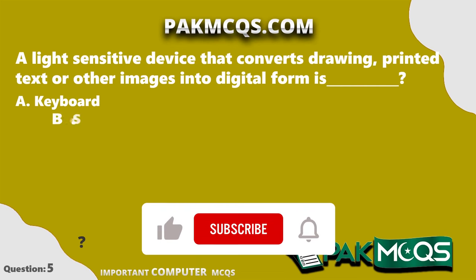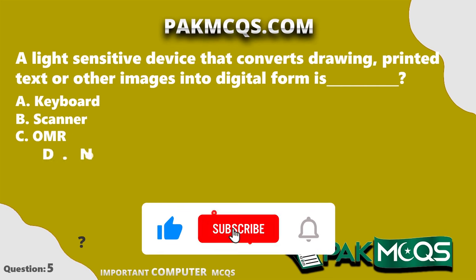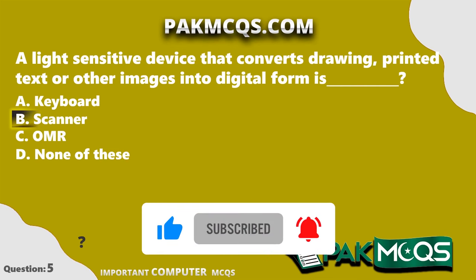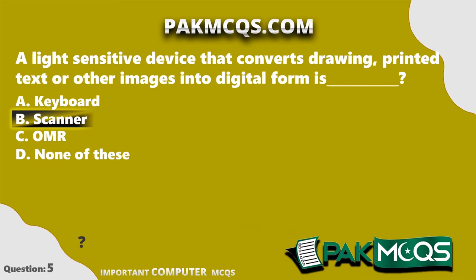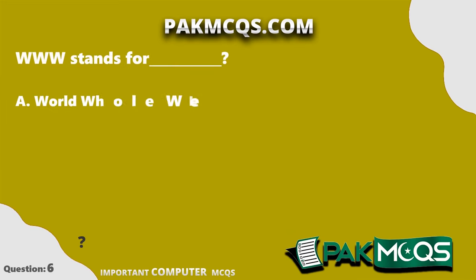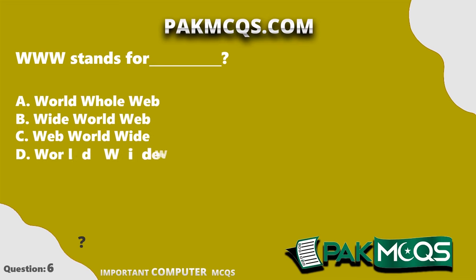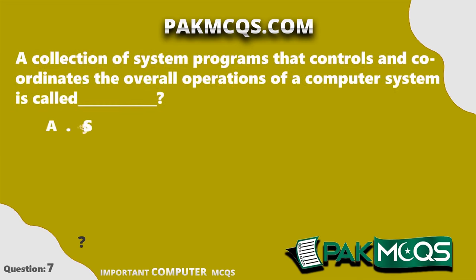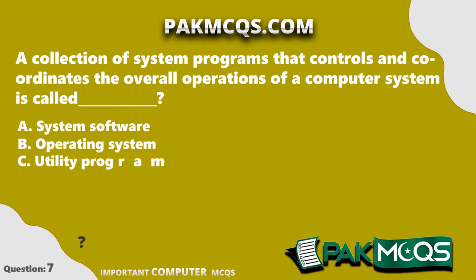A light-sensitive device that converts drawings, printed text, or other images into digital form is called a scanner. WWW stands for World Wide Web. A collection of system programs that controls and coordinates the overall operations of a computer system is called an operating system.